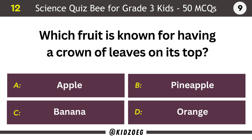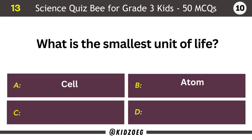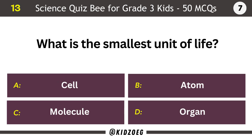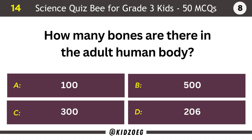Which fruit is known for having a crown of leaves on its top? Pineapple. What is the smallest unit of life? Cell. How many bones are there in the adult human body? 206.